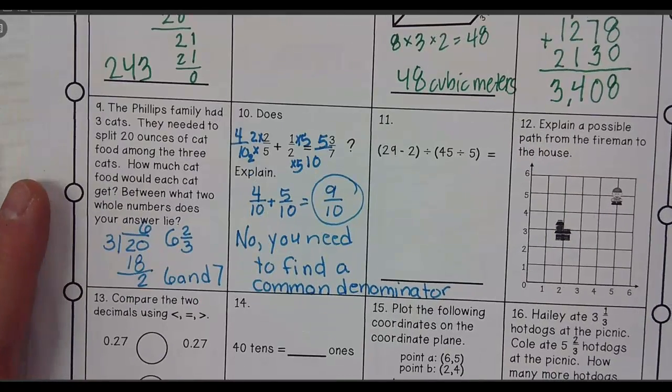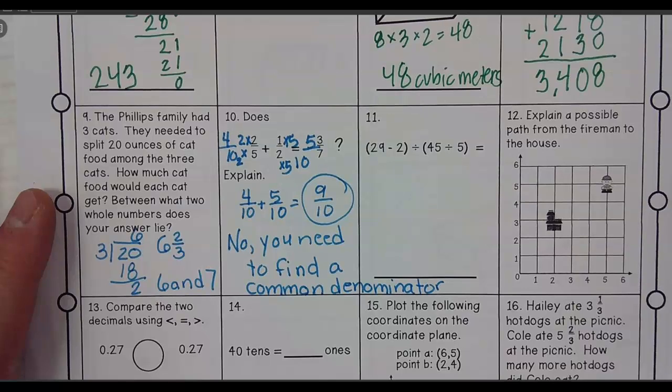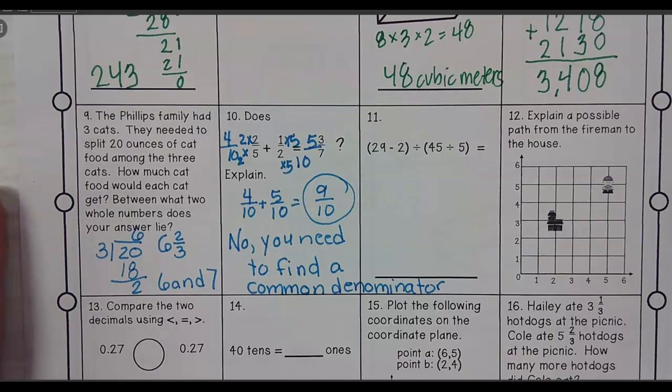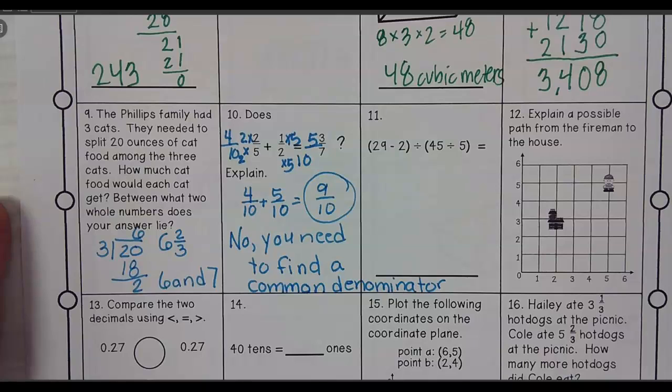Number 11. So I have to do, please excuse my dear Aunt Sally. So I'm going to do parentheses first. Parentheses first.